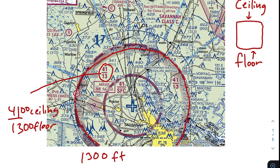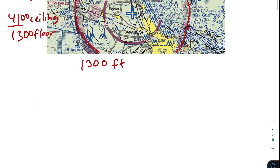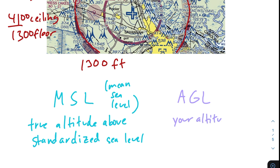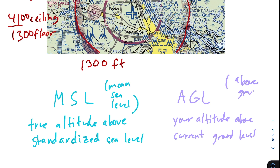Now we need to figure out if this is MSL or AGL, so let's talk about what those two things are. MSL is defined as the true altitude above standardized sea level — it stands for mean sea level. So when you see MSL, think sea level. On the other hand, AGL is defined as your altitude above current ground level — it's short for above ground level.